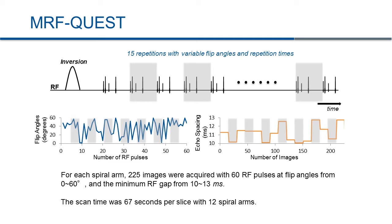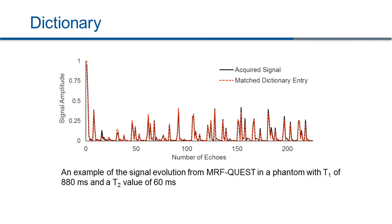With these acquisition parameters, we calculated the dictionary using Bloch simulations with a range of T1 and T2 values. Here is an example of signal evolution at T1 of 880 milliseconds and T2 of 60 milliseconds. A complex inner product was used to match the acquired signal to each entry of the dictionary. The entry with the maximum inner product is selected to represent the acquired signals. The black curve represents the acquired signal and the dotted red curve is the matched dictionary entry.